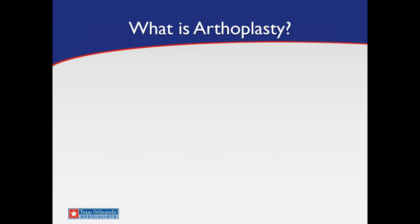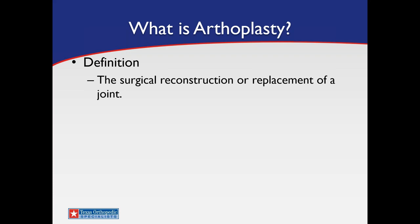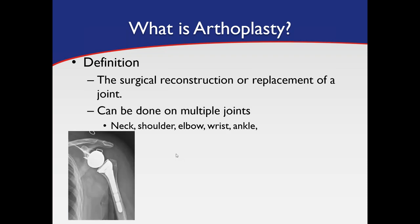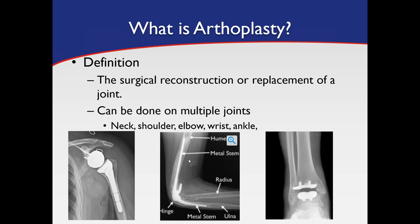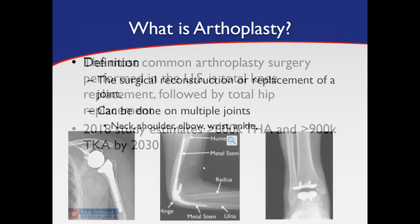So what is arthroplasty? By definition, it's the surgical reconstruction or replacement of a joint, and this can be done at almost any joint in the body — the neck, shoulder, elbow, wrist, or ankle. Here at Texas Orthopedic Specialists, we have specialists who do shoulder, elbow, and ankle replacements, as well as hip and knee. So if you have pain in any of those areas that's just not getting better, these are opportunities we offer to help with daily pain.